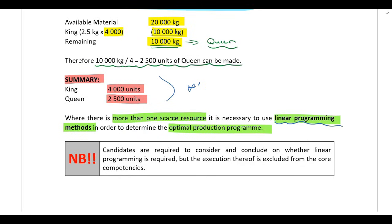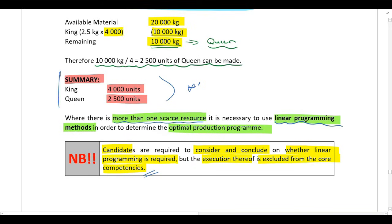If there is more than one scarce resource, linear programming is required to determine the optimal production plan. However, linear programming is outside the scope of your syllabus. You need to be able to discuss in your test or exam that if there is more than one scarce resource, linear programming is needed — but you do not have to actually perform the calculation, as that is beyond the scope of your syllabus.